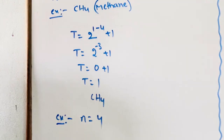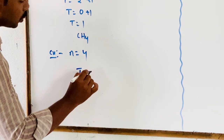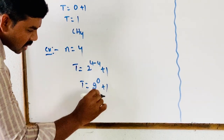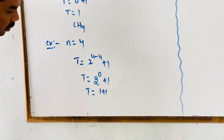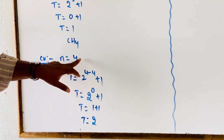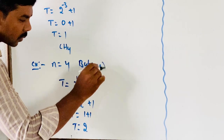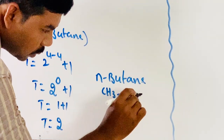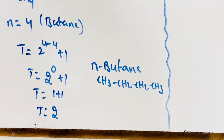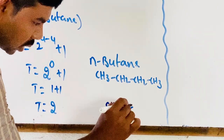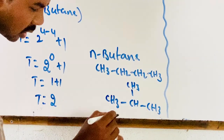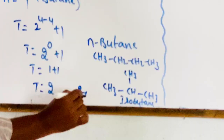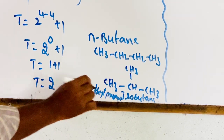For n = 4, total number of isomers T = 2^(4-4) + 1 = 2^0 + 1 = 1 + 1 = 2. Total number of isomers in butane (C4) is 2. The first is n-butane: CH3-CH2-CH2-CH3. The second is isobutane: CH3-CH(CH3)-CH3, also known as 2-methylpropane.